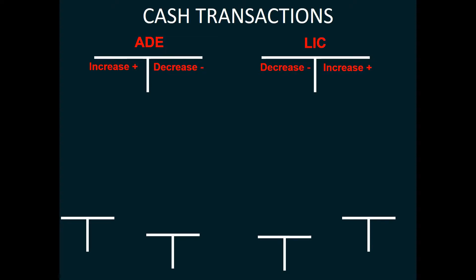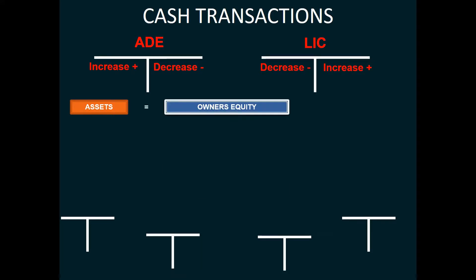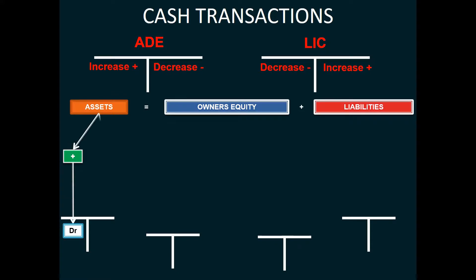Now let's have a look at our cash transactions. But first, let's have a look at the accounting equation. Now if you can remember, the accounting equation is assets is equal to owner's equity plus liabilities. Now if our asset increases, then we will record this on the debit side. But if it decreases, we will record it on the credit side.